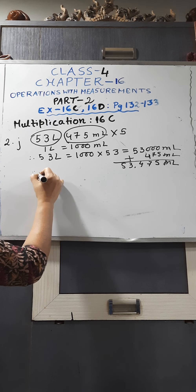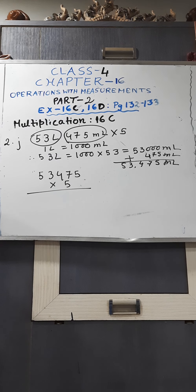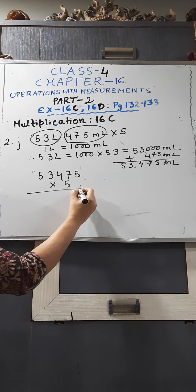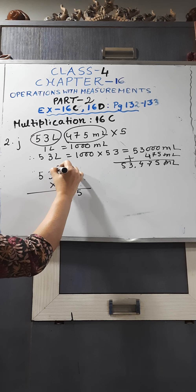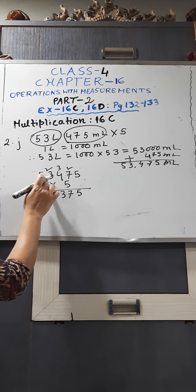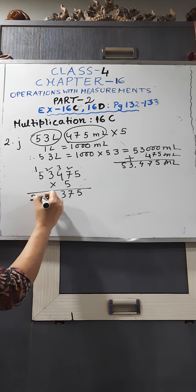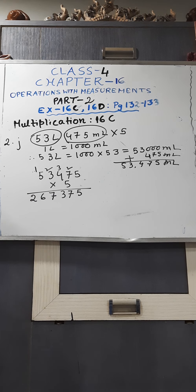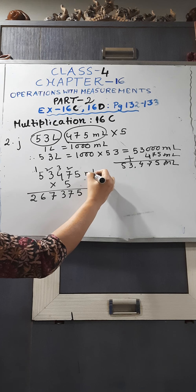Now we will do the multiplication: 53,475 by 5. 5 fives are 25 — 2 is carried. 5 fives are 25 plus 2 is 27 — 2 is carried. 5 fours are 20 plus 2 is 22 — 2 is carried. 5 threes are 15 plus 2 is 17 — 1 is carried. 5 fives are 25 plus 1 is 26. This is your number. But here you have to write the units. What was our unit? Millimetre.